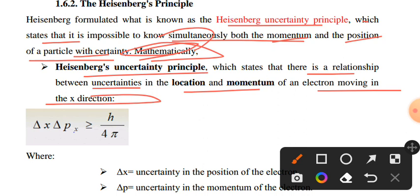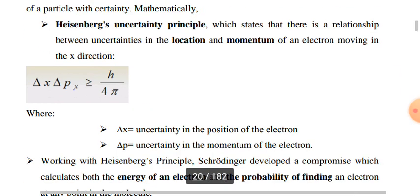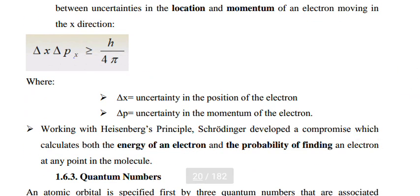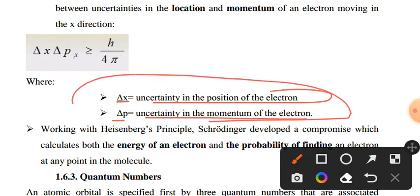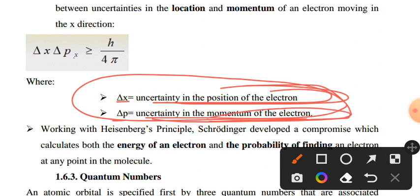The uncertainty relationship is delta x times delta p is greater than h over 4 pi. Delta x is the uncertainty in the position of the electron, delta p is the uncertainty in the momentum of the electron. The compromise calculates the energy of an electron and the probability of finding an electron at any point in a molecule.